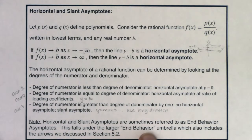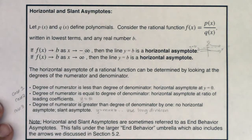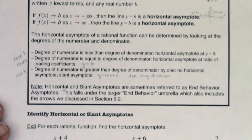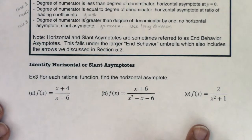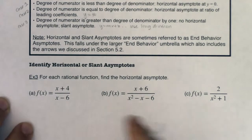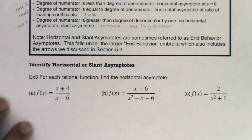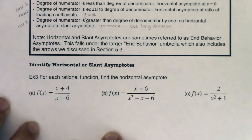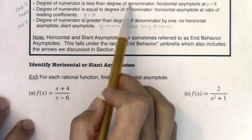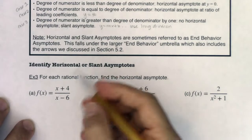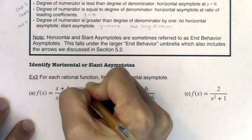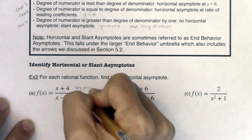This idea falls under the larger end behavior umbrella, which also includes the arrows we discussed in section 5.2. I know this seems like a lot, and I'm going to do case one, case two, case three. Look at example three — we're going to identify horizontal or slant asymptotes. Again, you can't have both. So for each rational function, find the horizontal asymptote, or the end behavior asymptote. Let's figure out what cases we're working with here. I need to figure out the degree in the numerator and the degree in the denominator regardless of which case we're on.